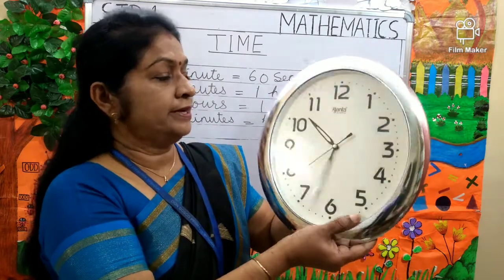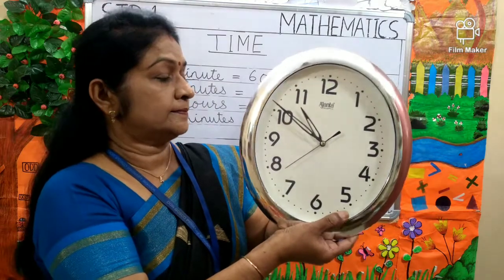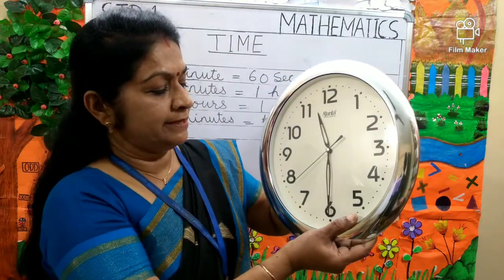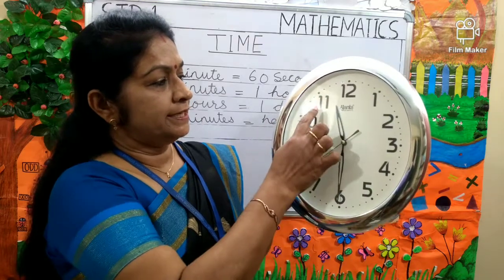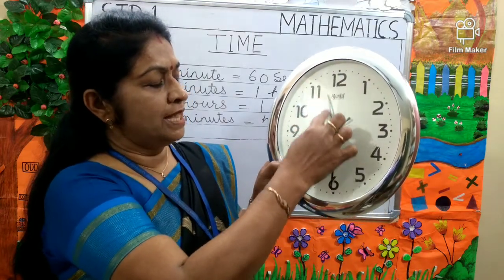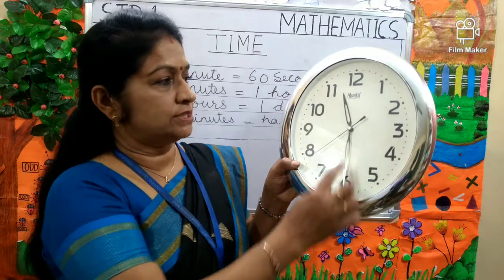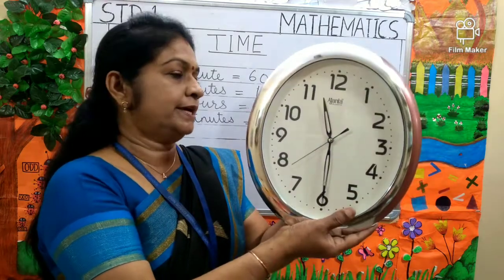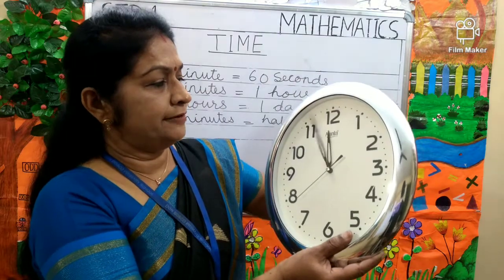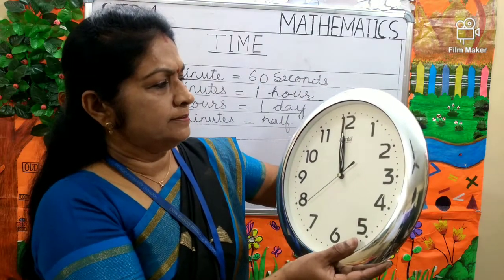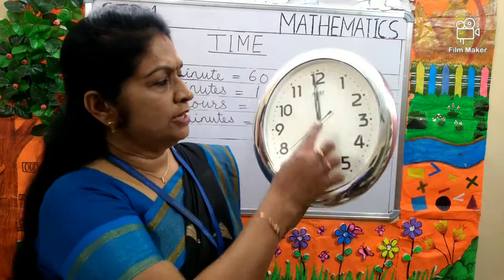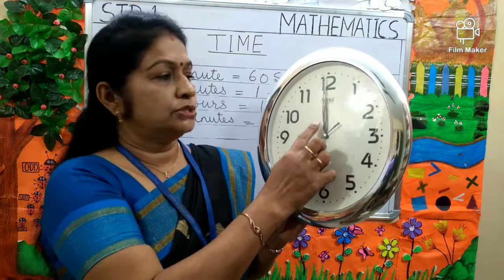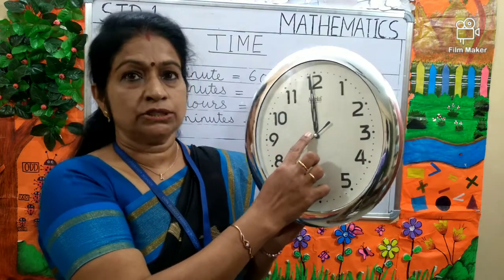It is moving. Can you tell me what is the time? It is between 11 and 12 and the minute hand is on 6. So, the time is 11.30. Now, you see both the hands are on 12 — the hour hand and minute hand is on 12. So, it is 12 o'clock.